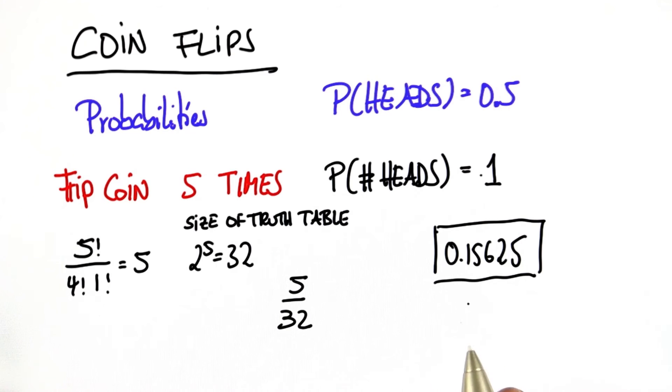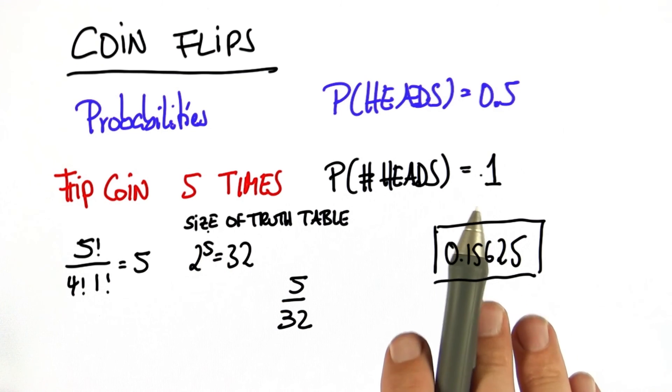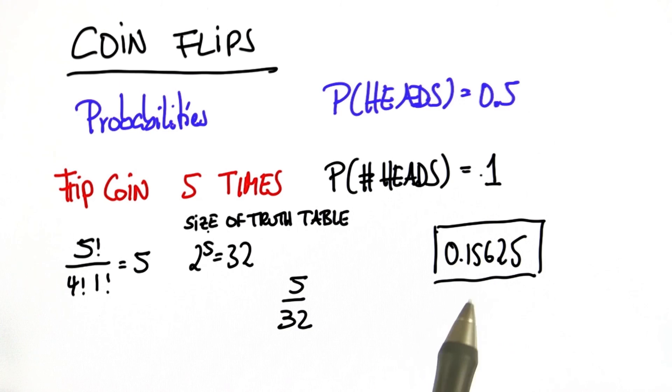So that is actually interesting. If you flip a coin 5 times, there's a chance that it only comes up heads exactly once. And that is the probability, 0.15625.